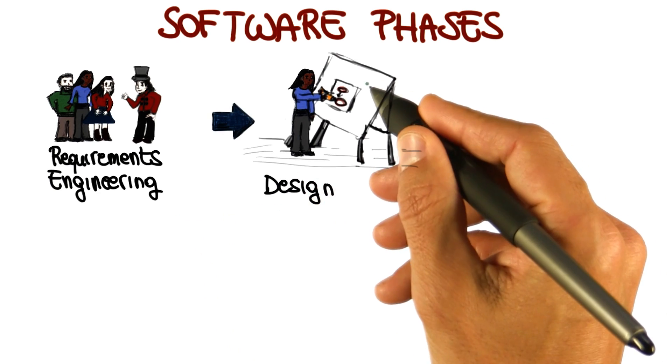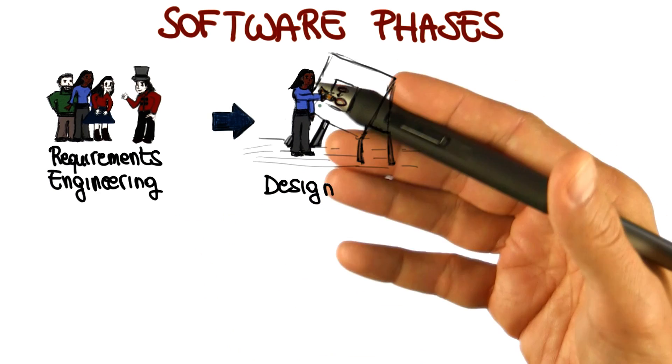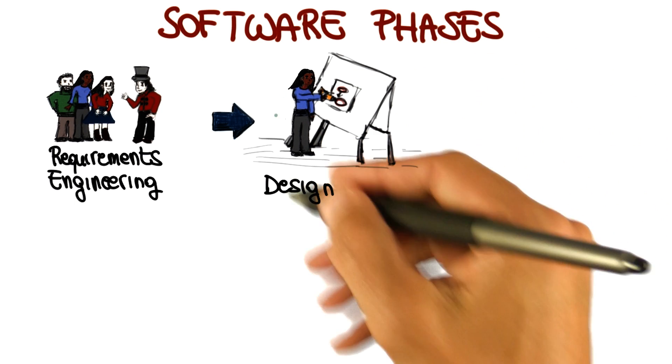Then we use this information to define our design. The design is the high level structure that then can become more and more detailed of our software system.